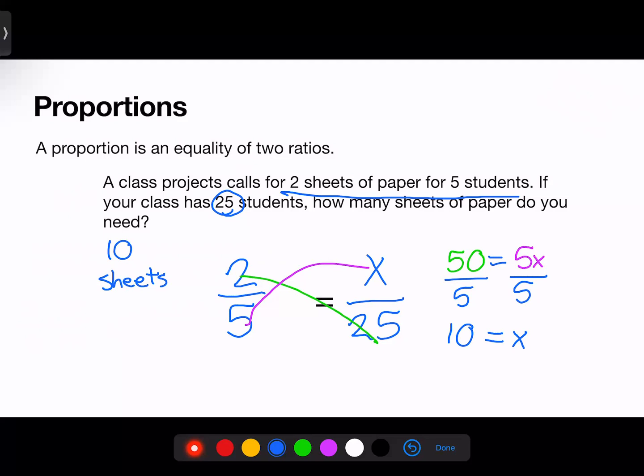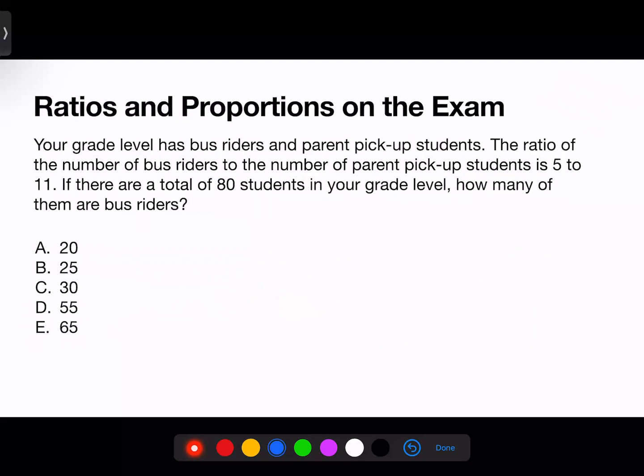Now, let's look at a ratio and proportion problem that you may encounter on the exam. Your grade level has bus riders and parent pickup students. The ratio of the number of bus riders to the number of parent pickup students is 5 to 11. If there are a total of 80 students in your grade level, how many of them are bus riders? Our given ratio is bus riders to parent pickup, B to P, 5 to 11.